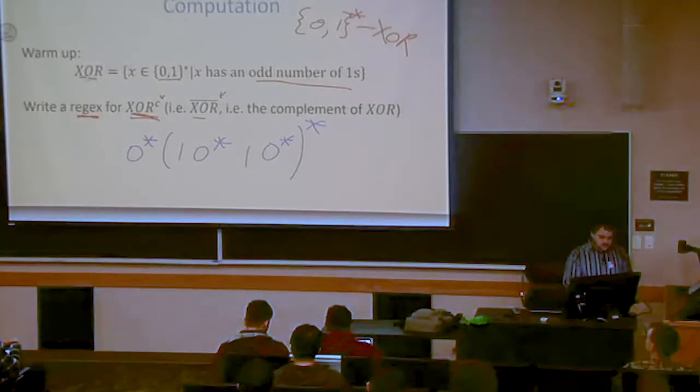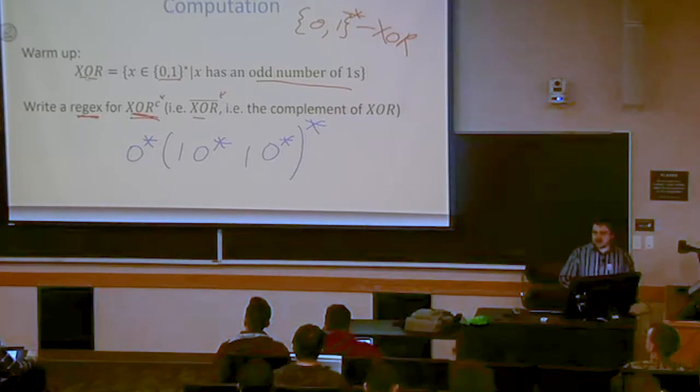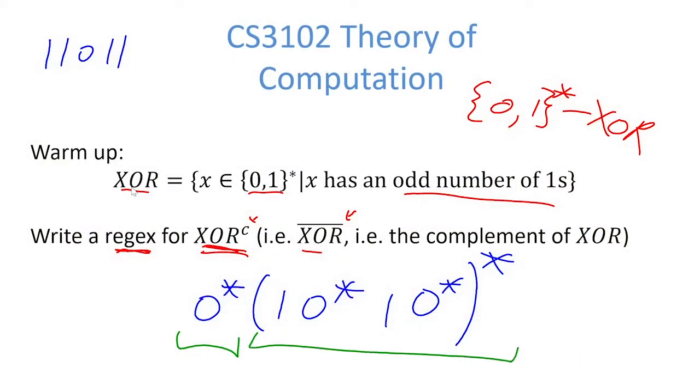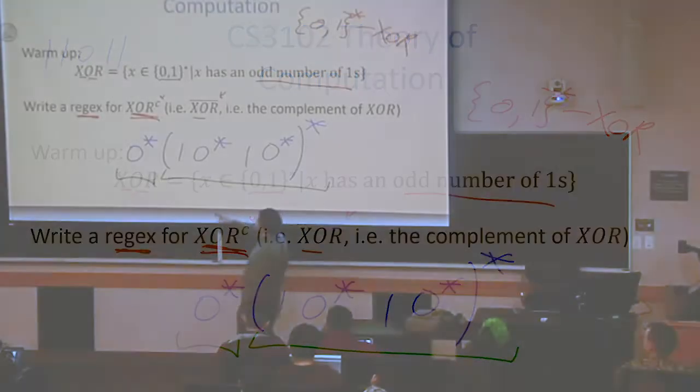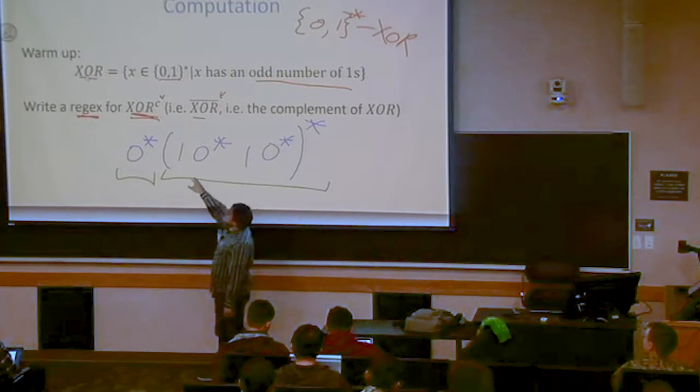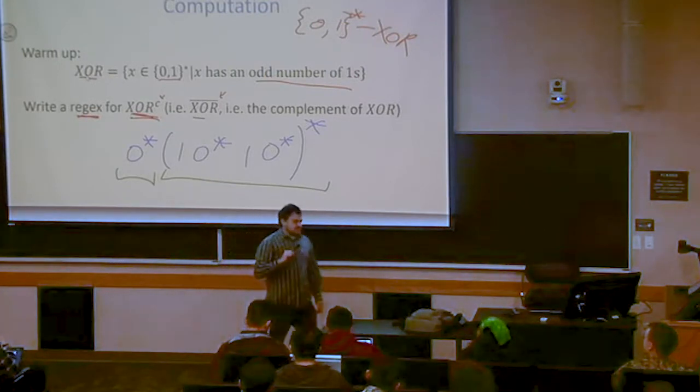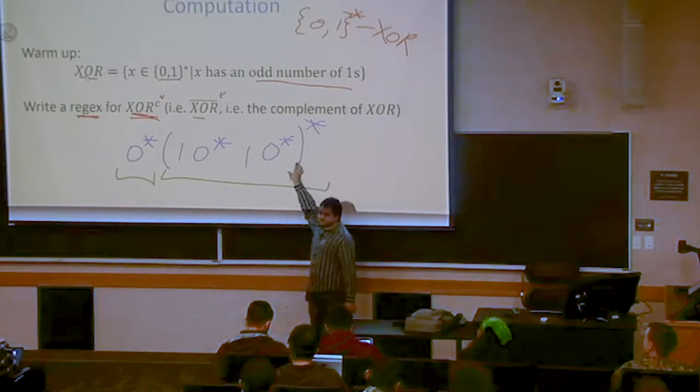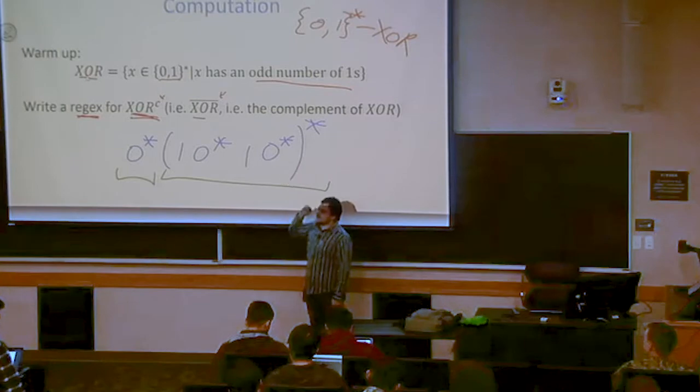So when we look at one, one, zero, one, one, we want to figure out is there some way I can, first of all, break it into two pieces so that the first piece matches 0* and then the second piece matches that. So we have a concatenation. So to figure out with this regular expression, if it matches the string, we need to basically say break the string into two pieces so that we can do the concatenation. So can we break this string into two pieces such that the first piece matches 0* and the second piece matches this other thing?